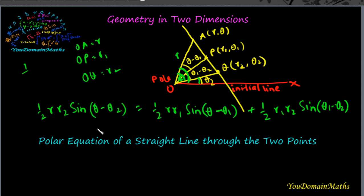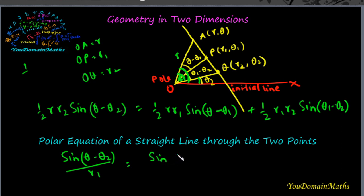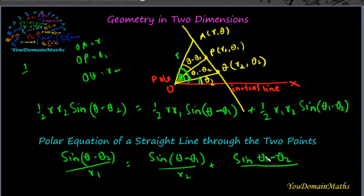Substituting and rearranging, we get: sin(θ − θ₂)/r₁ = sin(θ − θ₁)/r₂ + sin(θ₁ − θ₂)/r. This is the equation of a straight line passing through the two points P(r₁, θ₁) and Q(r₂, θ₂).